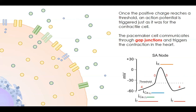Once the threshold is reached, an action potential fires and the contractile cells are informed. Then the process starts again — a slow trickle building toward threshold, much like an hourglass but much faster. This rhythmic cycle is how the heart keeps a regular beat. Once that threshold is reached and a pacemaker cell fires, the information is communicated to contractile cells through gap junctions. There are also factors that can affect how much calcium or sodium gets in and how quickly the threshold is reached, allowing the heart rate to change based on environment.